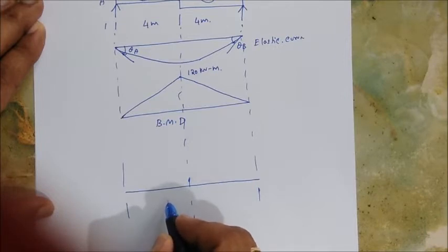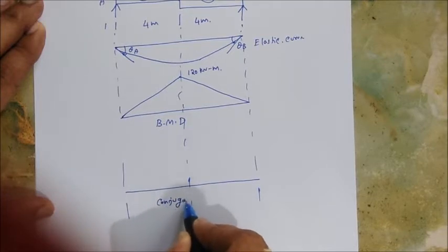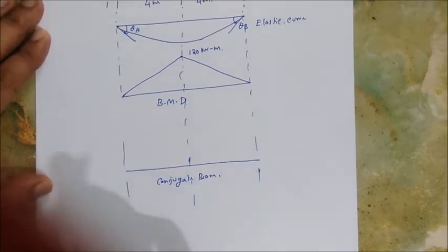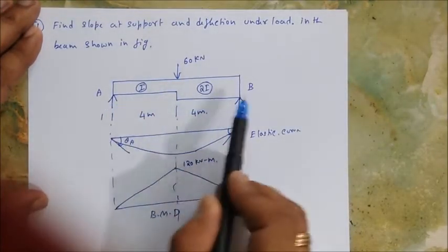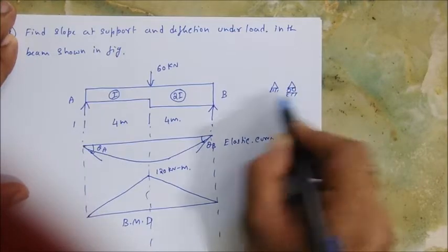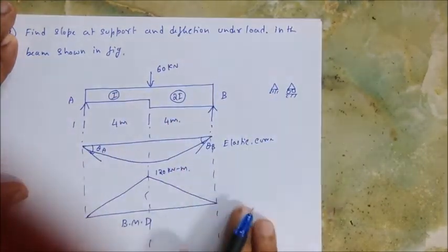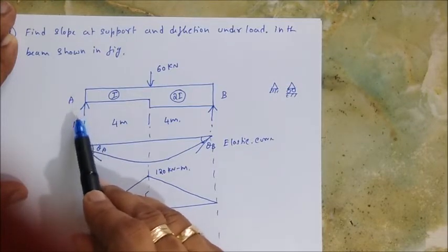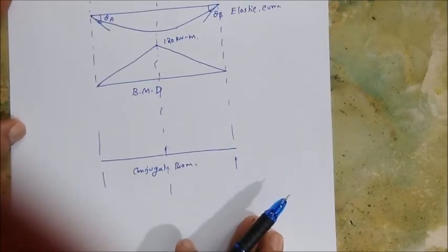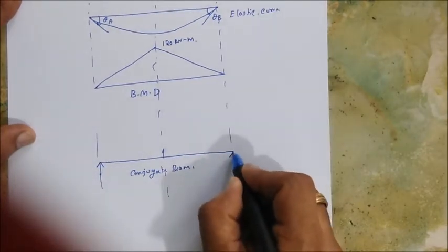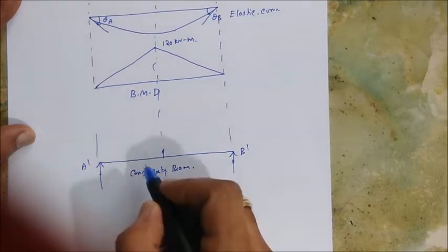Now let's draw the conjugate beam. In the conjugate beam, first we need to take care about the support conditions. In a simply supported beam, if both ends are hinges or rollers, the support condition at the end will not change. The hinge at the end will remain a hinge, so simply supported remains simply supported — no change at the ends. So this is A dash and this is B dash.